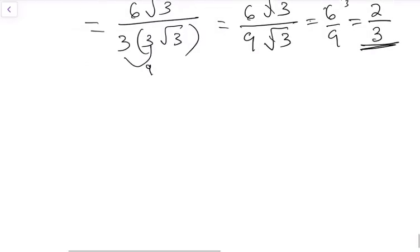Now we go to our final question for division. We have number 5: square root of 200 plus square root of 50 over square root of 5.